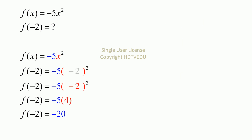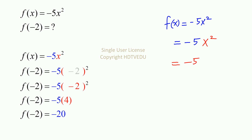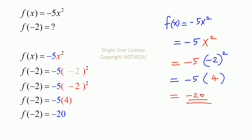Now let us evaluate the function at x equals negative 2. We start with f of x equals negative 5 x squared. At the position of the x, we have negative 2 — what is negative 2 times negative 2? It is positive 4. So this is negative 5 times 4, which is negative 20. Our point is (negative 2, negative 20).